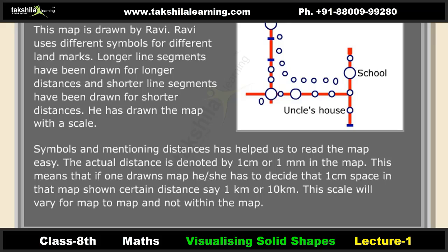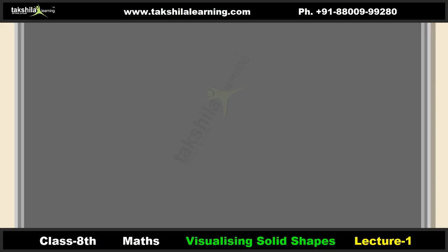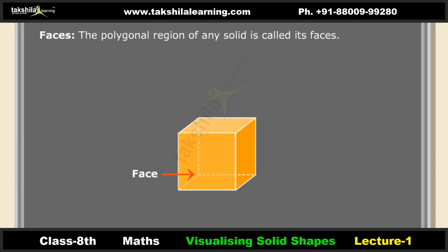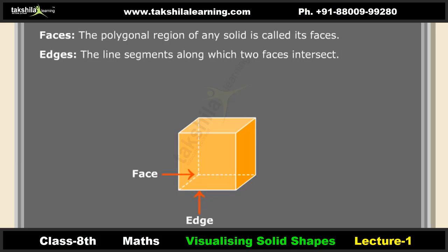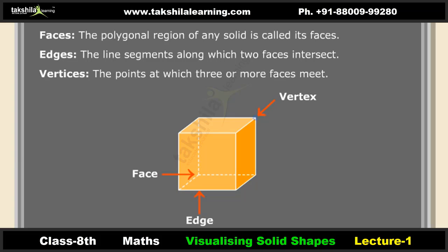Symbols and mentioning distances helps us to read the map easily. The actual distance is denoted by 1 cm or 1 mm in the map, meaning that 1 cm of space represents a certain distance, say 1 km or 10 km. This scale will vary from map to map but not within the map. Faces, edges and vertices: the polygonal region of any solid is called its face.